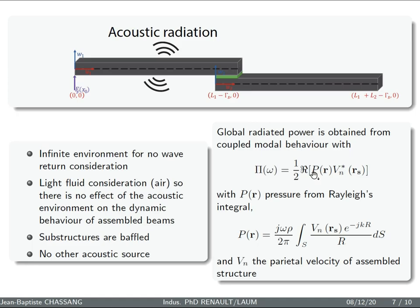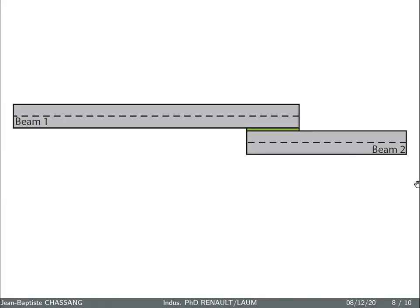So we determine the global radiation power of the assembled structures with this statement. So we need the parietal pressure from the Rayleigh integral, as you can see here, and the velocity, the parietal velocity of the assembled structures.